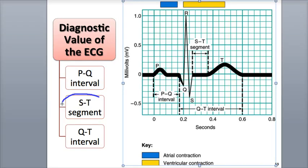The ST segment starts at the end of the S wave and ends at the start of the T wave. It's usually one-tenth of a second in length. It indicates the length of time of ventricular depolarization occurring during the plateau phase of the action potential. It will be longer than normal during myocardial infarction and shorter than normal if the heart is not getting enough oxygen.